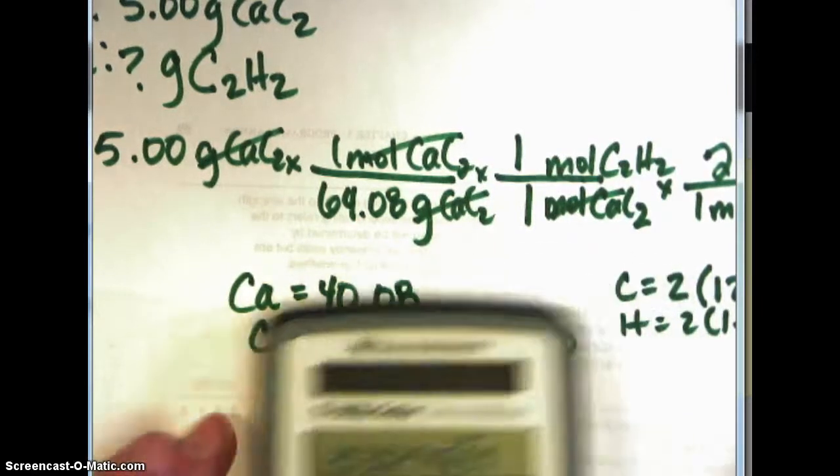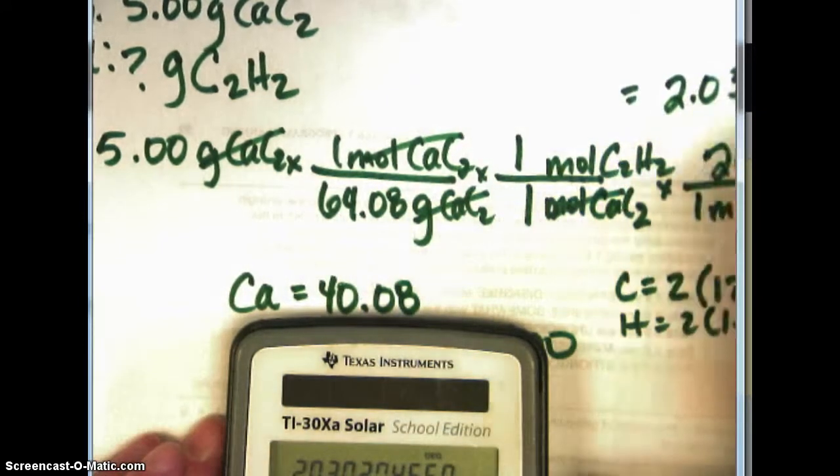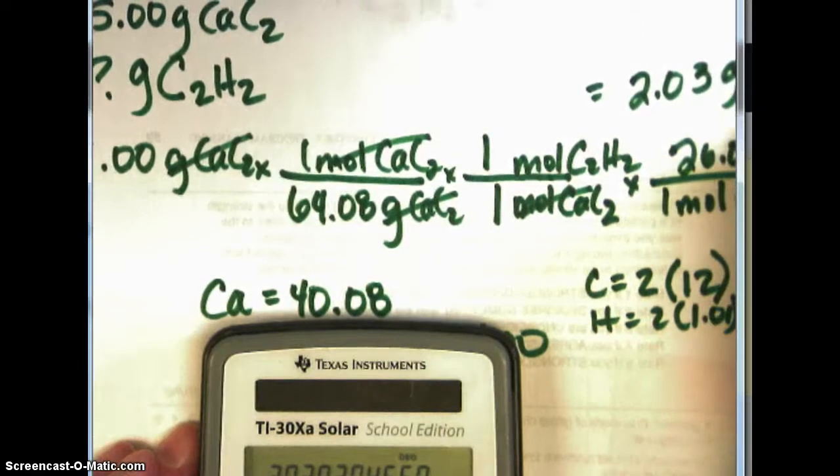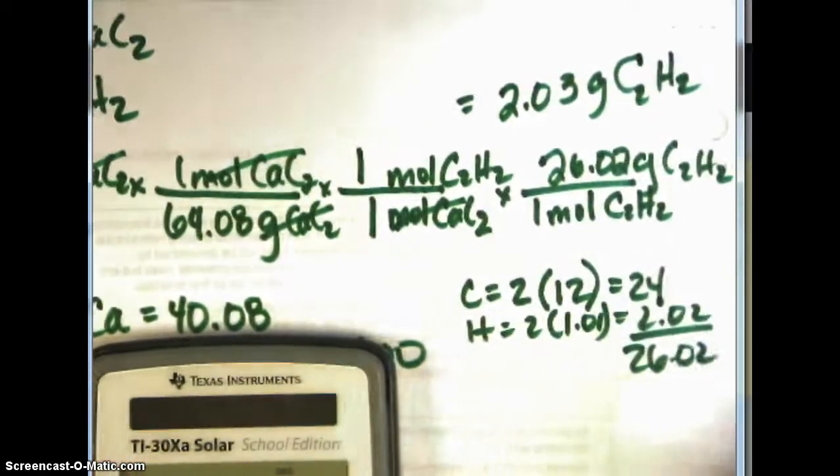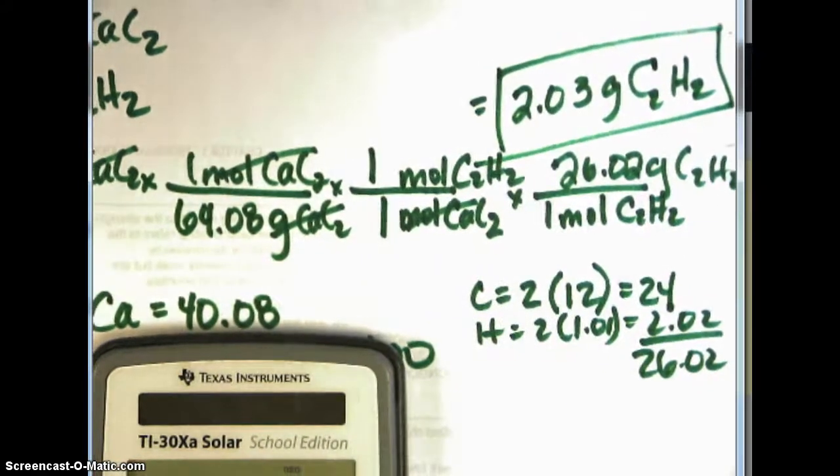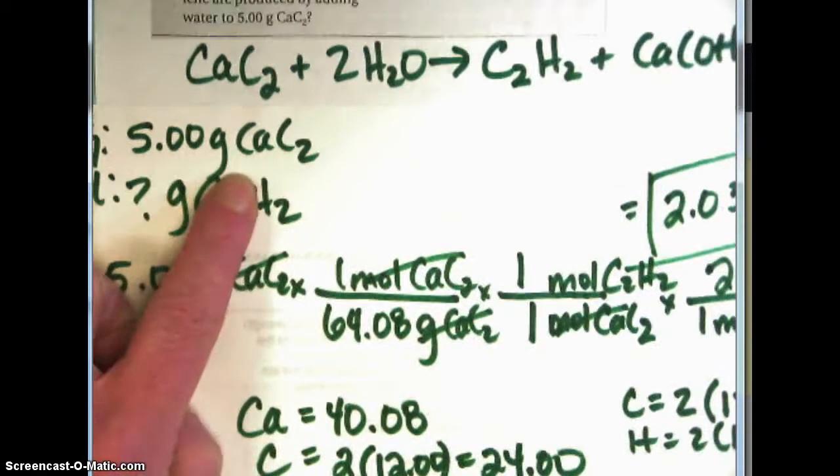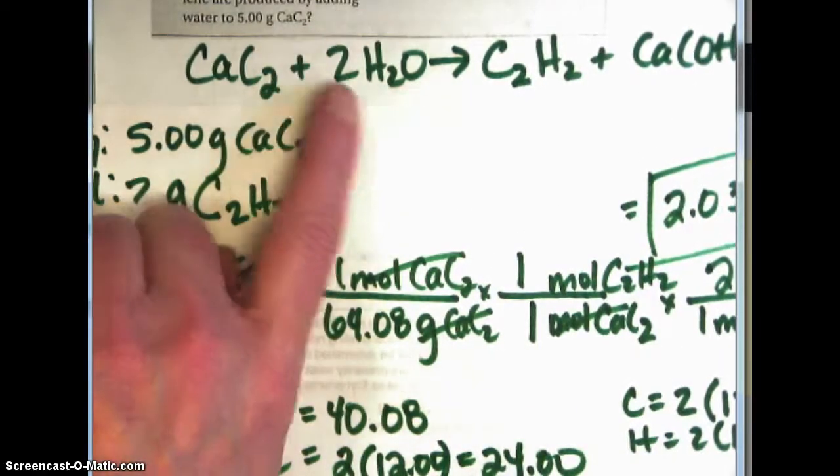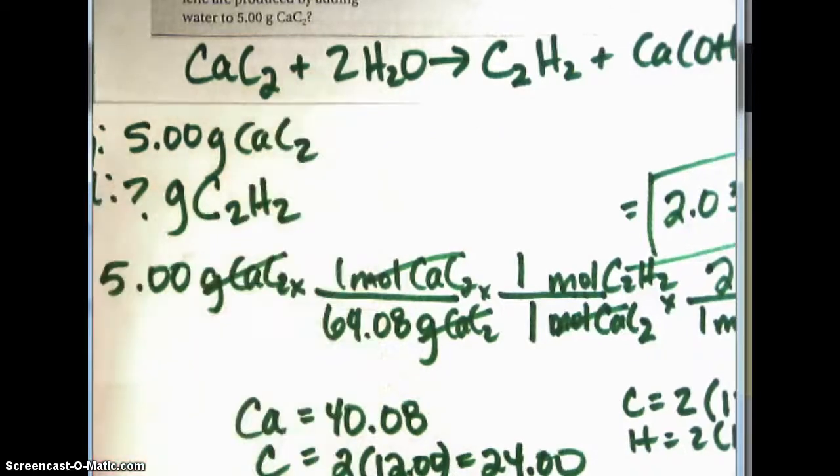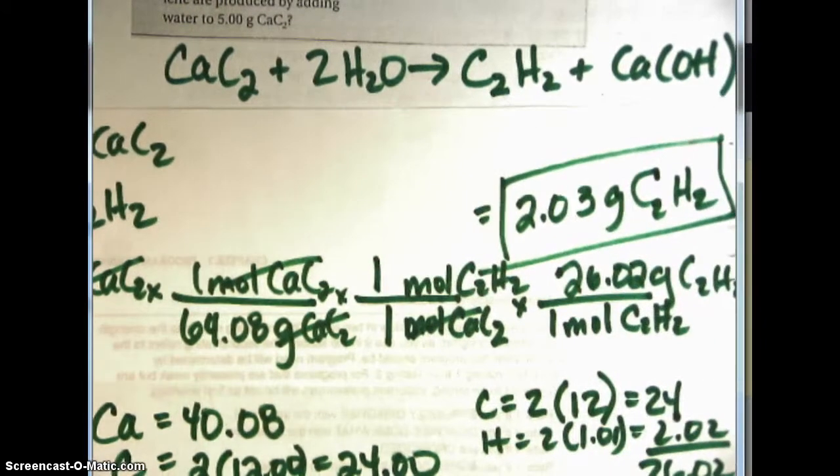And I have 2.03 grams of C₂H₂ which is acetylene gas that is produced so big picture if I start off with 5 grams of calcium carbide then I can produce with unlimited amount of water or water in excess assuming that I have more than water than I need I will produce 2.03 grams of acetylene gas.